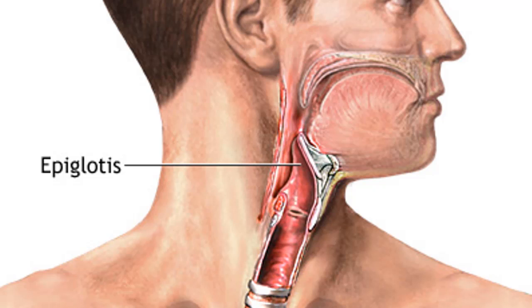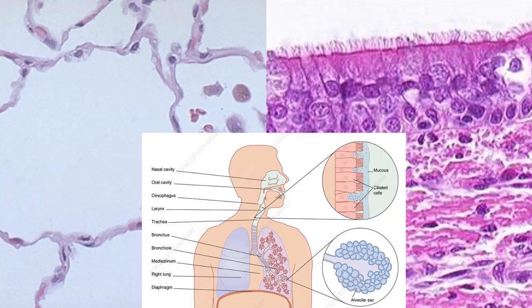The laryngopharynx is the last place where both food and air share the same space. To prevent food from entering the airway, the epiglottis flips down to cover the larynx when we swallow. Along the respiratory tract, pseudostratified columnar epithelial tissue with cilia and mucus-producing goblet cells lines the upper trachea and bronchioles. Airborne debris sticks to the mucus, and cilia move it up and out of the body.